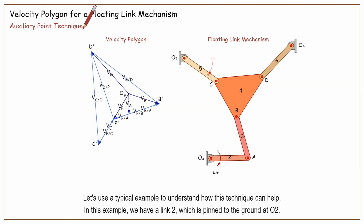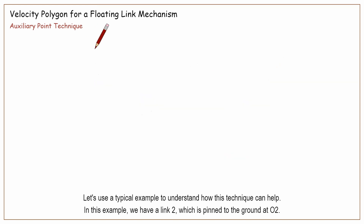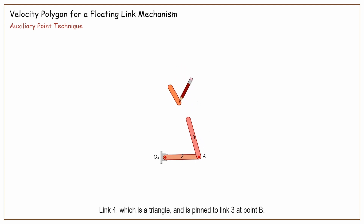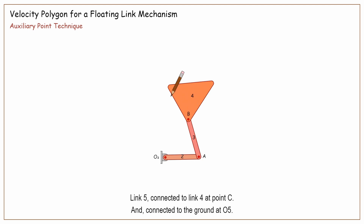Let's use a typical example to understand how this technique can help. In this example, we have a link 2, which is pinned to the ground at 0.2. Link 3 is connected to link 2 by pin A. Link 4, which is a triangle, is pinned to link 3 at point B. Link 5 is connected to link 4 at point C, and connected to the ground at 0.5.